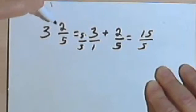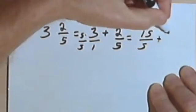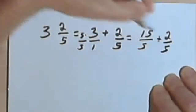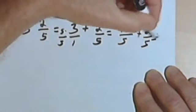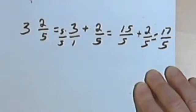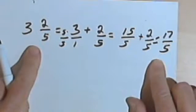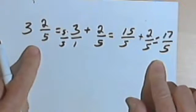Over 5, plus 2 over 5, well that's going to equal 17 over 5. Now that I've done that, let me show you a much faster way to do it.